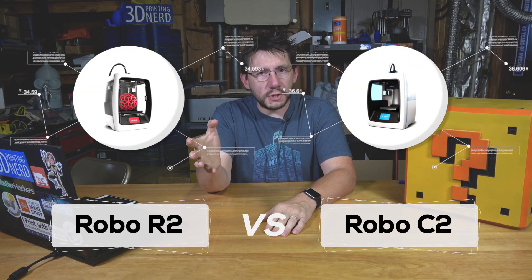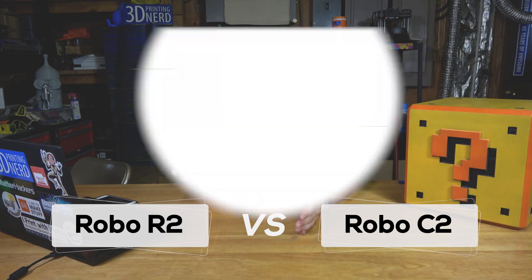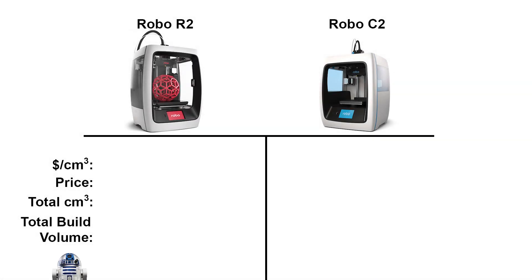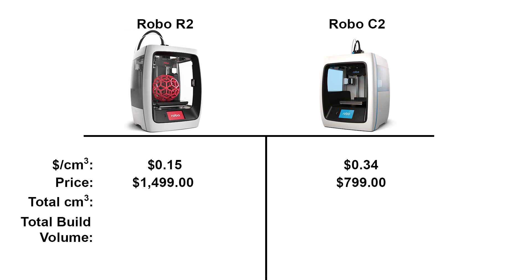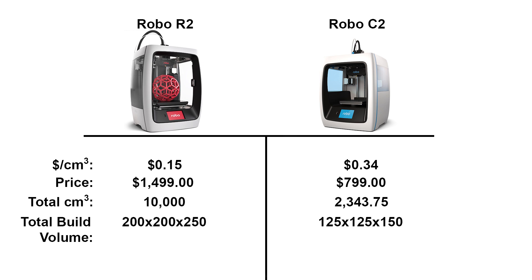Let's look at a printer manufacturer who has multiple offerings. The Robo R2 is 15 cents per cubic centimeter of build volume, whereas the Robo C2 — its lower-cost offering — is 34 cents per cubic centimeter. The R2 is $700 more than the C2, but the build volume of the R2 is more than four times the size of the C2.